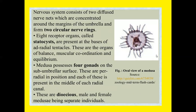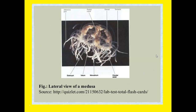The whole canal system is lined by an inner layer of gastrodermis, and both the exumbrella and subumbrella surfaces are covered by epidermis. The nervous system consists of two diffuse nerve nets concentrated around the margin of the umbrella forming two circular nerve rings. Receptor organs called statocysts are present at the bases of adradial tentacles — these are organs of balance, muscular coordination, and equilibrium. Medusae possess gonads on the subumbrella surface in a perradial position, in the middle of each radial canal. Obelia medusae are dioecious — male and female medusae being separate.